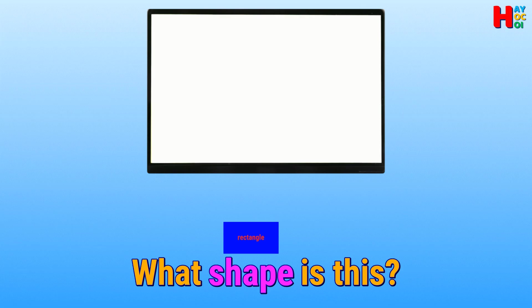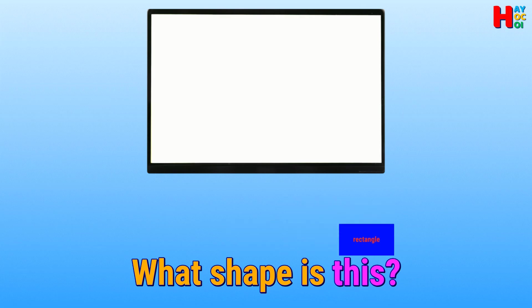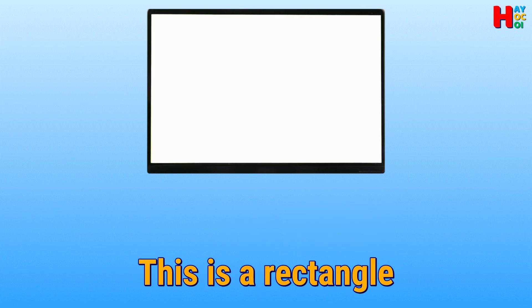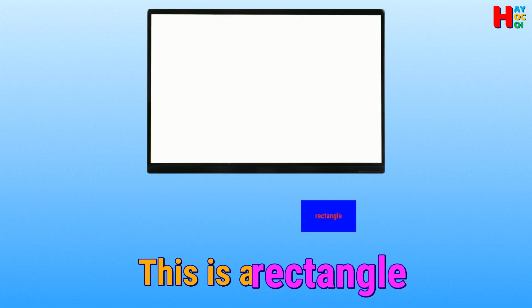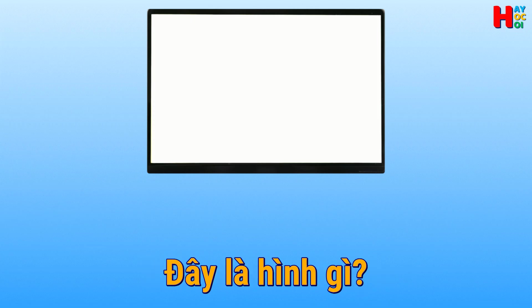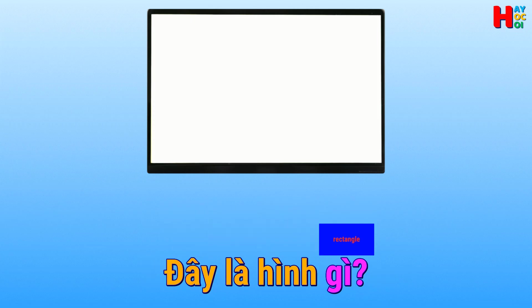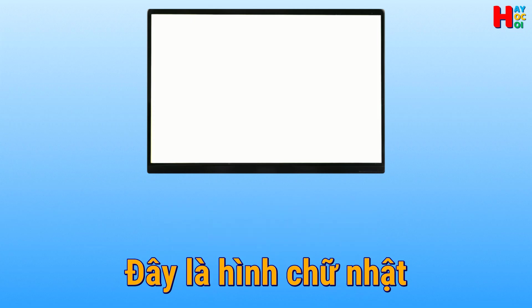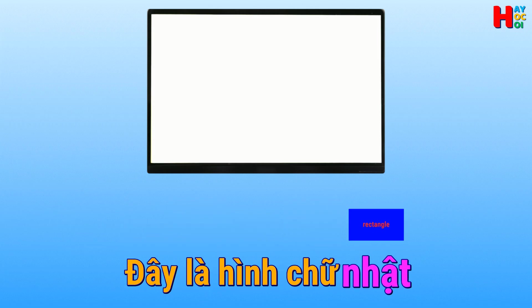What shape is this? This is a rectangle. Đây là hình gì? Đây là hình chữ nhật.